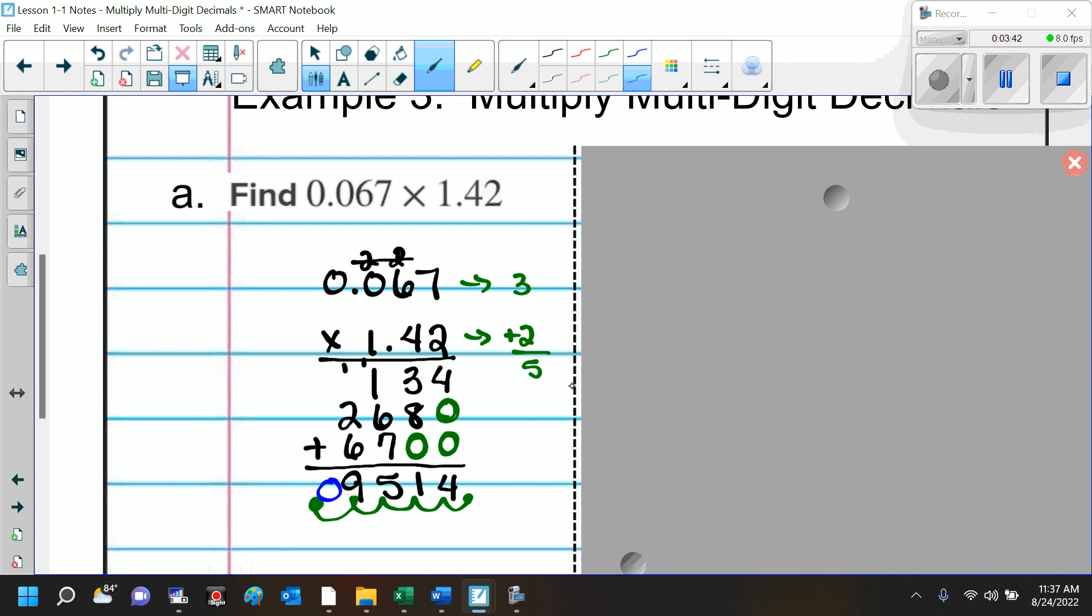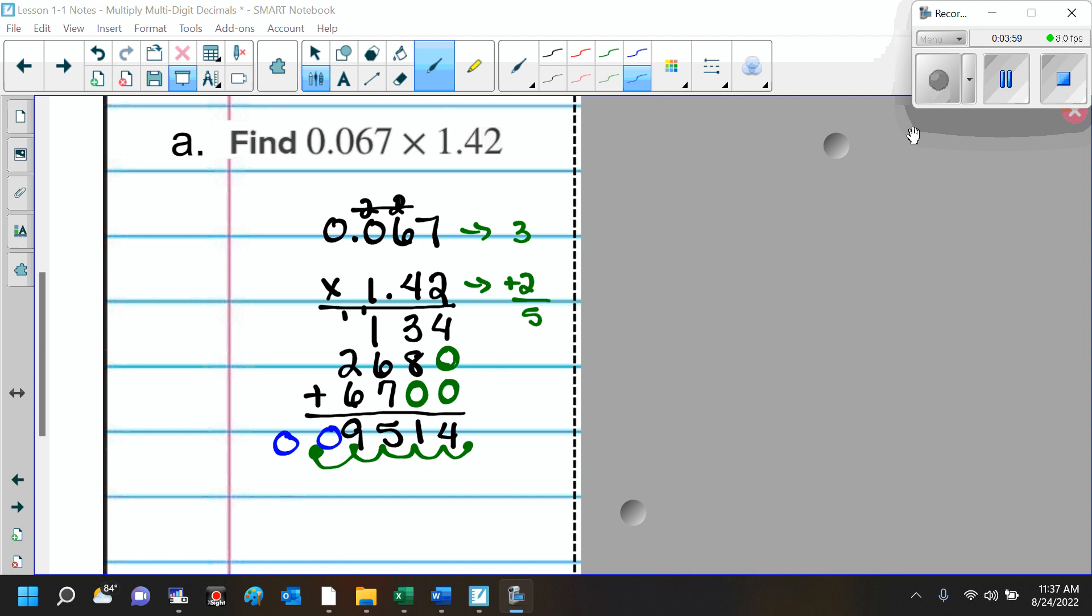What is it called when we're adding a 0? No, it starts with an A. You just wrote down the definition. Annex. Very good. We are annexing the 0. Now, another thing I told you that I wanted you to do, if you don't have a number in front of your decimal, I want you to put a 0 there, too. So, our final answer, I'll just rewrite it again down here. 0.09514.